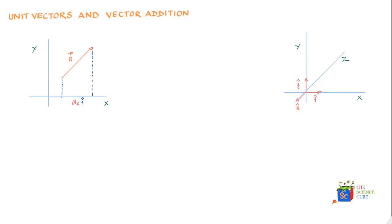Similarly, if you project vector A on the y-axis, you get ay, which is again just a scalar quantity. If you multiply it with unit vector j, it assumes the identity of a vector — the component of vector A on the y-axis. So unit vectors i and j help create the two vector components of vector A.